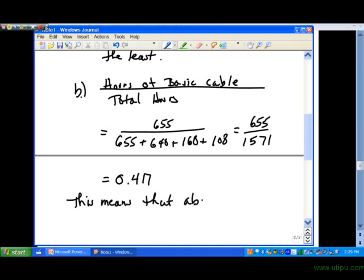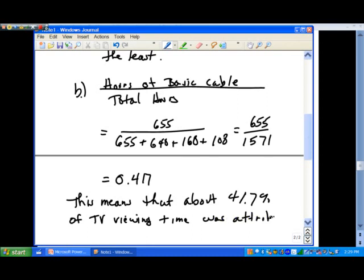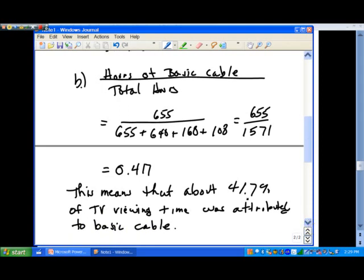So if we divide that, we end up getting 0.417. So let's interpret the solution here. This means that about 41.7 percent of TV viewing time was attributed to basic cable.